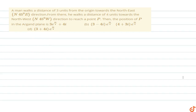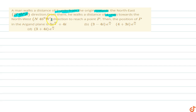In this case, a man walks a distance of 3 units from the origin towards the northeast, 45 degrees east direction. From there, he walks a distance of 4 units towards the northwest, 45 degree direction, to reach point P. Find the position of point P.